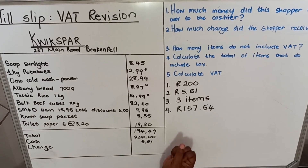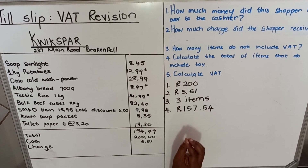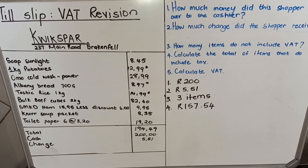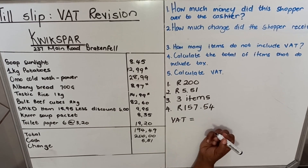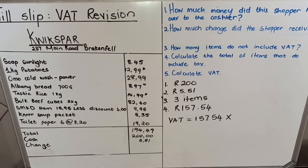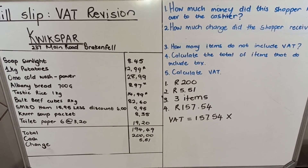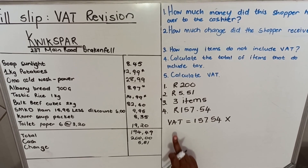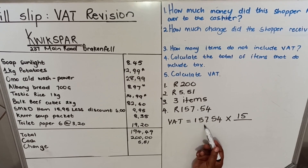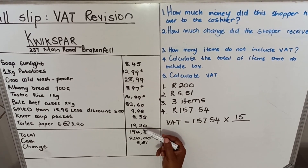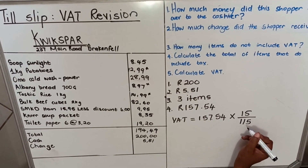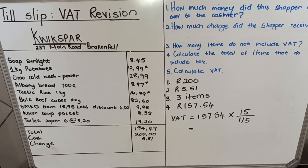Part number five: calculate the VAT. For the items that include VAT, how much VAT did you pay? There is a video on our channel that shows how to calculate VAT. When you calculate VAT, it equals the amount — which is 157.54 — multiplied by 15 over 115. In that video I explained that you multiply what you want over what you are given in percentage. We want 15%, divided by 115 because this amount is VAT-inclusive — it already has VAT inside it, so it's not 100 but 115.